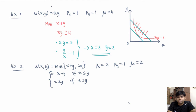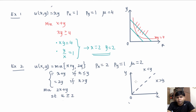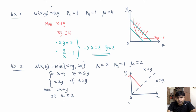Let's plot an indifference curve for a utility level of 2, because we want to minimize 2x plus y subject to utility being greater than or equal to 2. In the region where x is less than or equal to y, we plot x plus y equal to 2. In the region where x is greater than y, we plot 2y equal to 2, which is y equal to 1. The slope of the first portion is 1 and the slope of the second portion is 0.